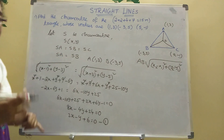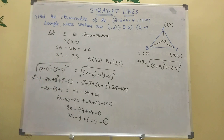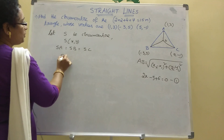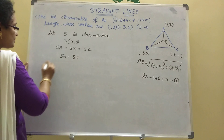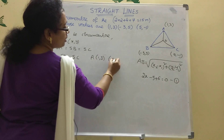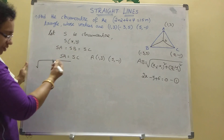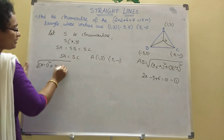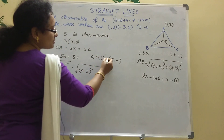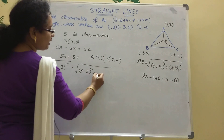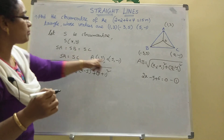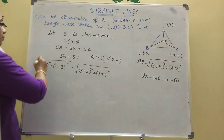Similarly, now we take SA = SC. Point A is (1, 3) and point C is (5, -1). Applying the distance formula: square root of (x - 1)² + (y - 3)² = square root of (x - 5)² + (y + 1)². Both sides have square roots, so we cancel them.